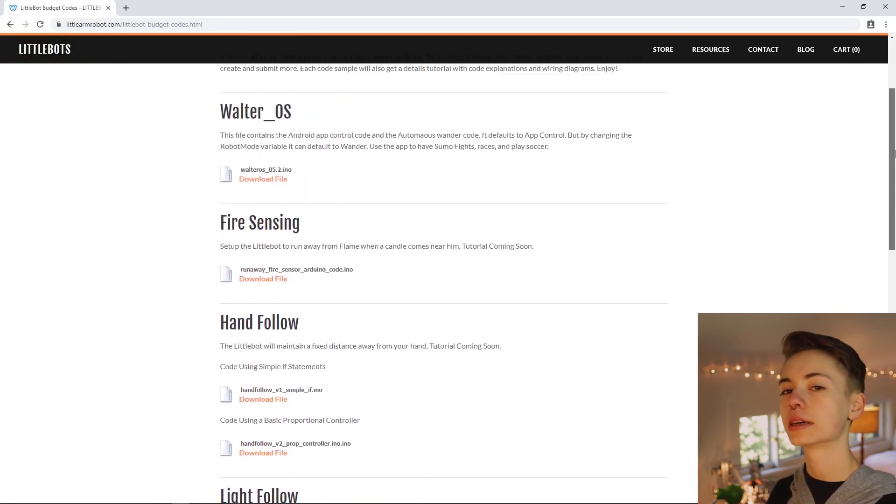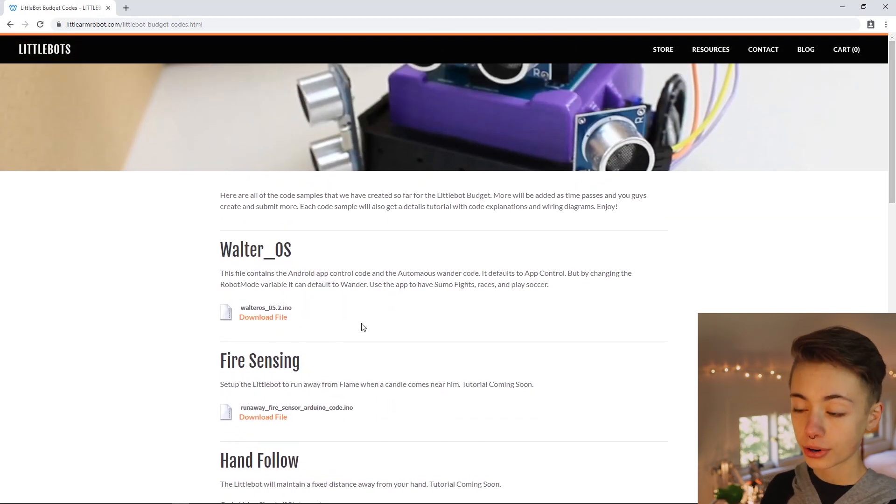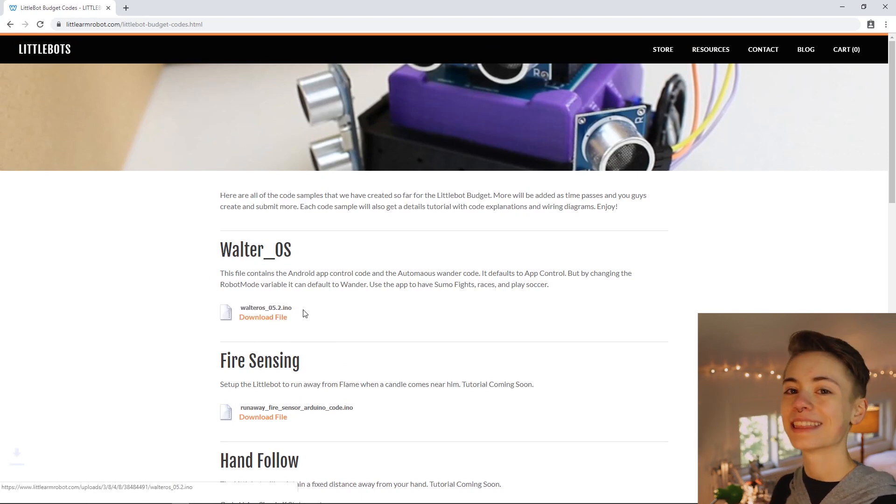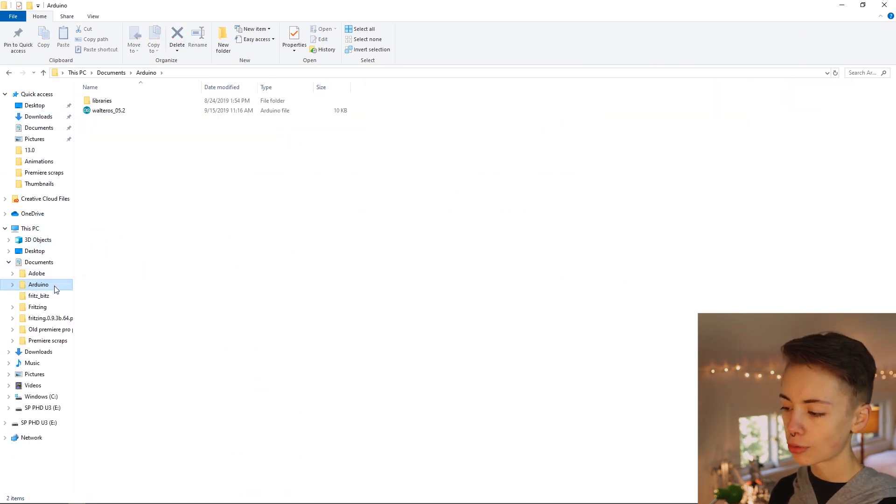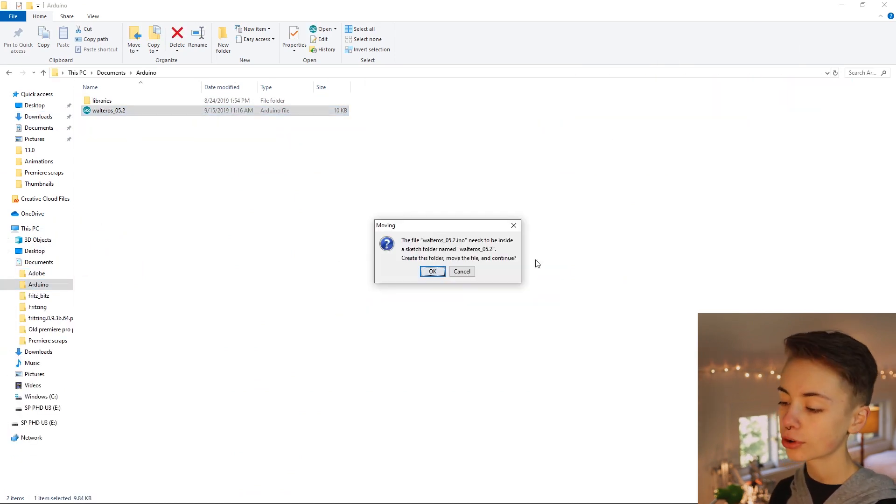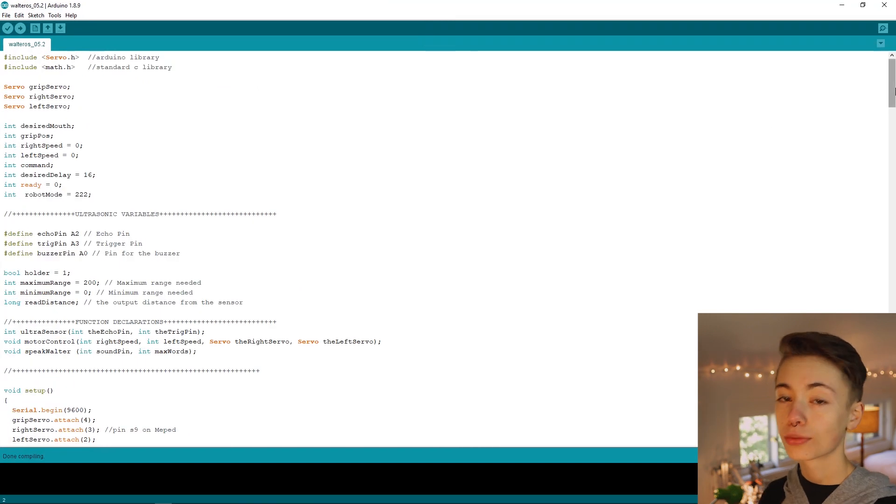There's a link in the description that will take you to the download page for Little Bot's code. It's called walter_os_0 5.2.ino. Download that, then let's move that newly downloaded file into your Arduino folder. Try to open it, say yes to creating a sketch folder, and boom.